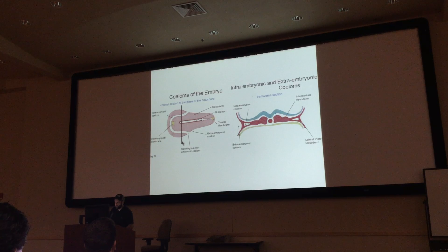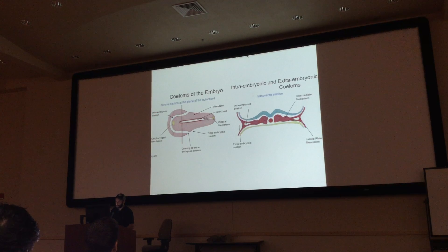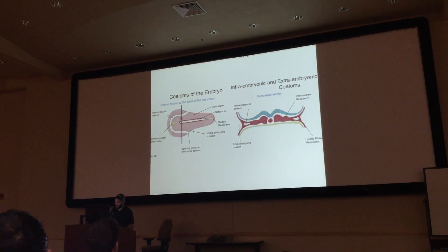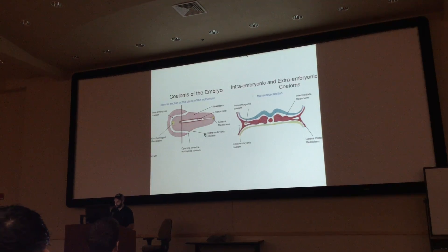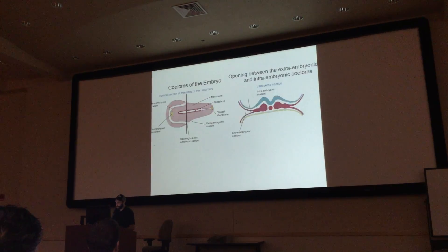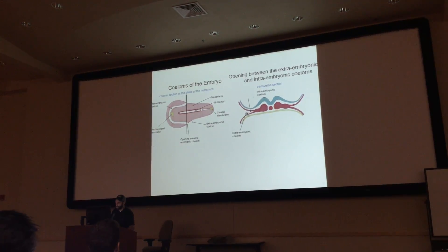This is a cut that shows you this view. He shows you a coronal section of this stuff before going on to explain what forms what. Here's another example of the same thing — he cut it further back to where the connection itself is open, so you have a connection between these two. There's no separation between extra and intra coelom.